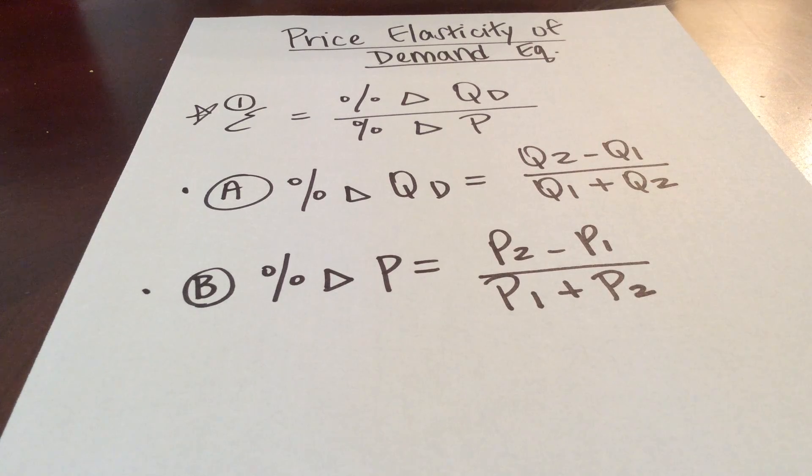And for this equation, Q1 is the original amount of quantity demanded. Q2 is the new amount of quantity demanded once price has changed. Equation B for our percentage change in price is very similar.